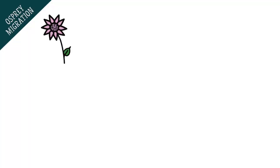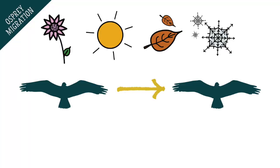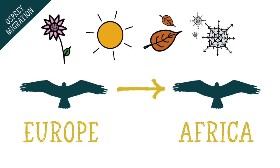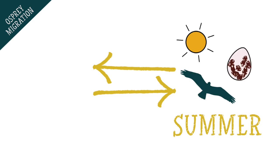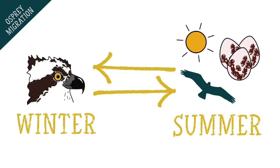Migration is the seasonal movement of animals from one place to another. This can be across different countries or even continents, as is the case with the osprey. Ospreys make this journey twice every year in order to move between their summer homes where they breed and raise chicks, and tropical regions where they spend their winter.